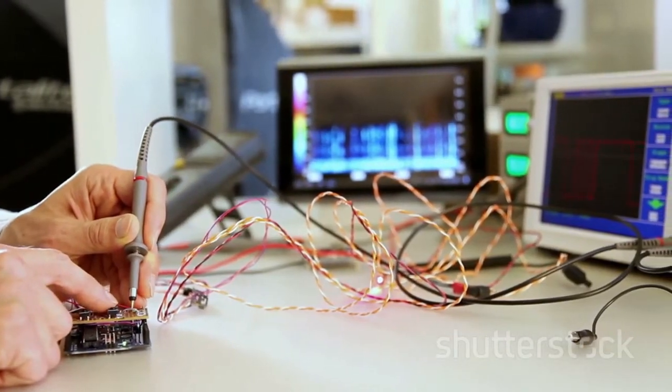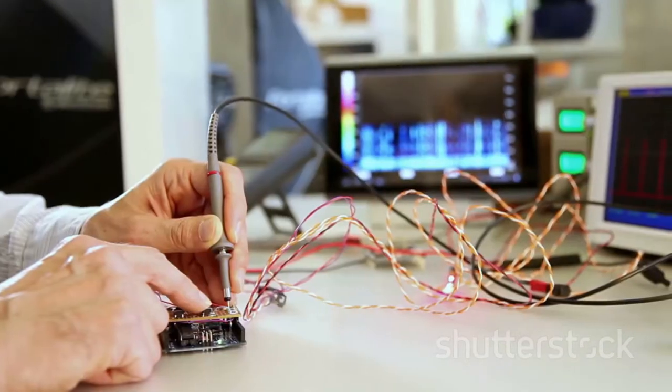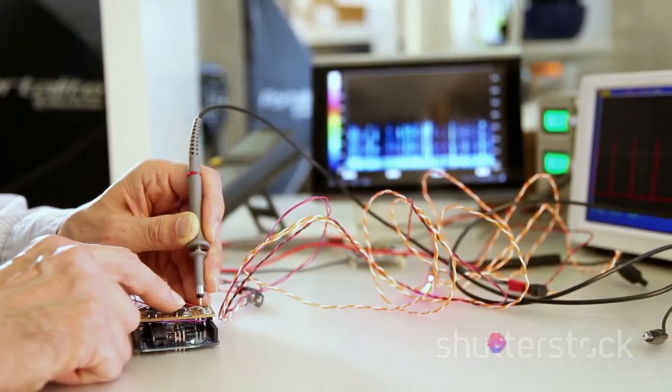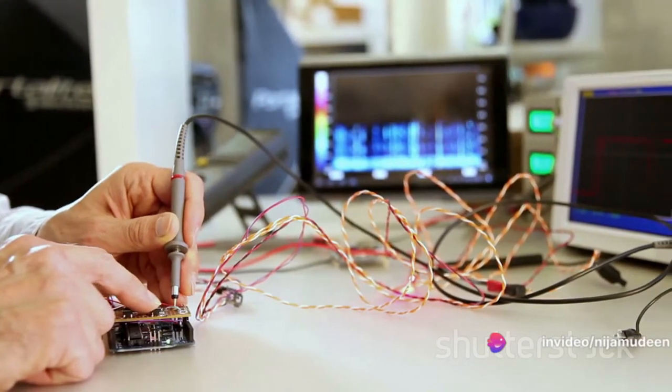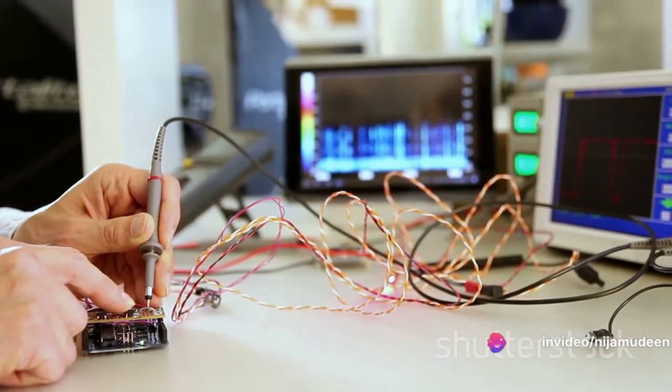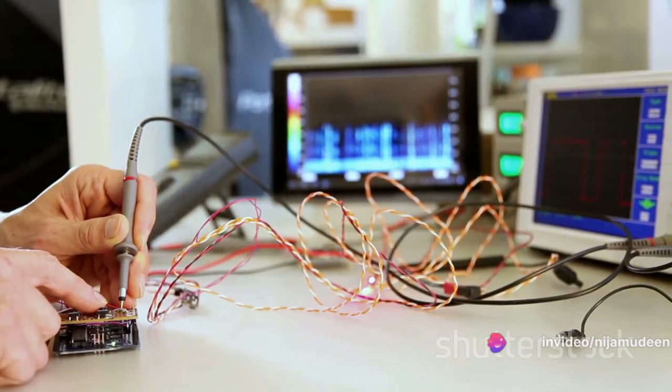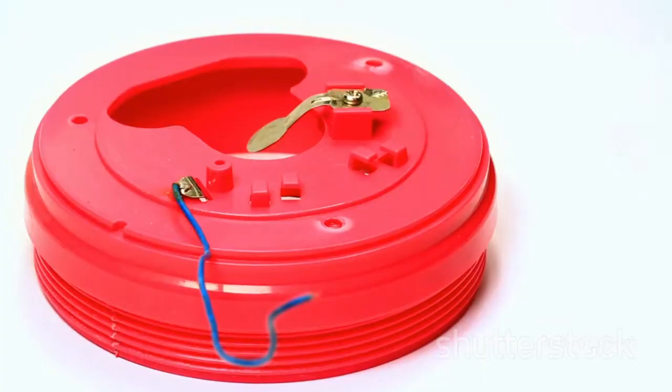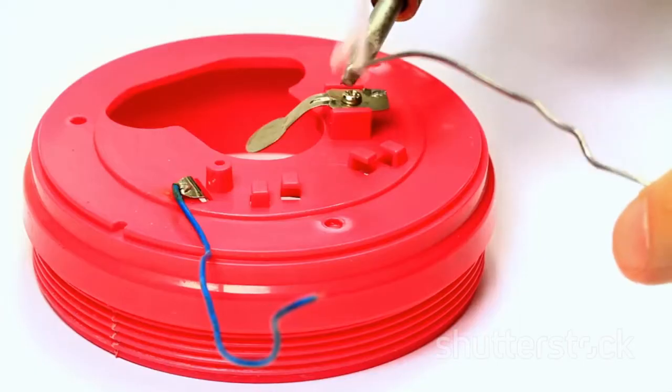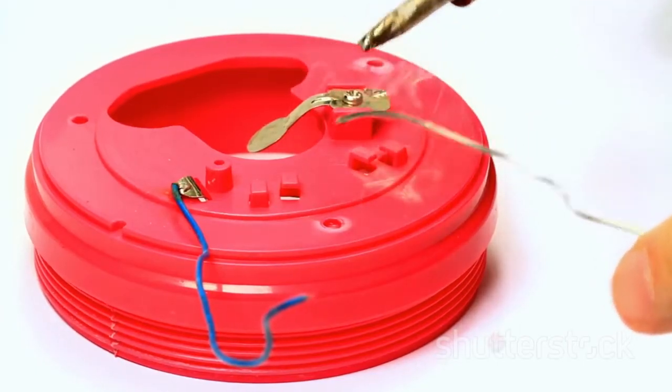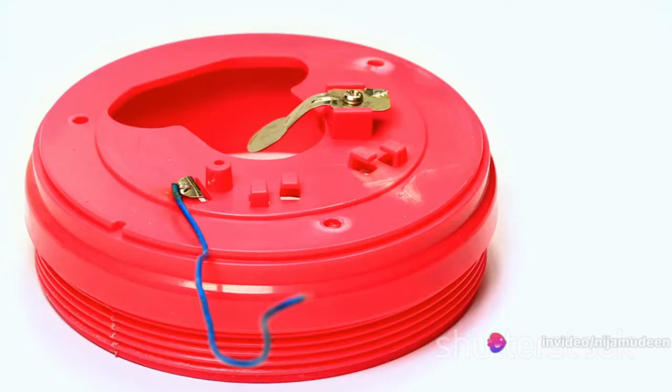The instrument then subtracts the second reading from the first. This effectively removes the resistance of the lead wires from the measurement, leaving only the RTD's resistance. Just as with the two-wire RTD, once we have the accurate resistance of the RTD, we can determine its temperature based on its predefined resistance temperature relationship.